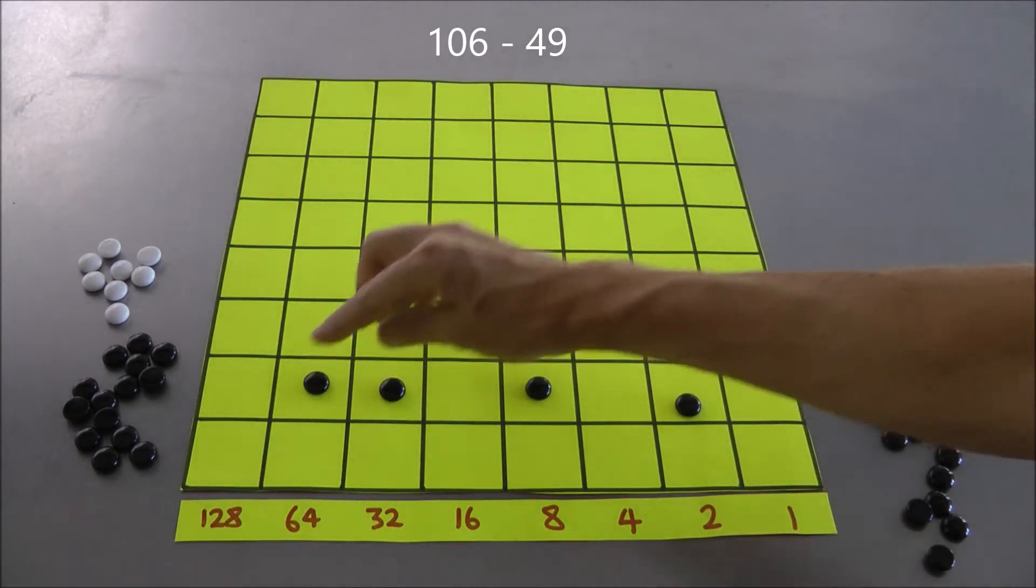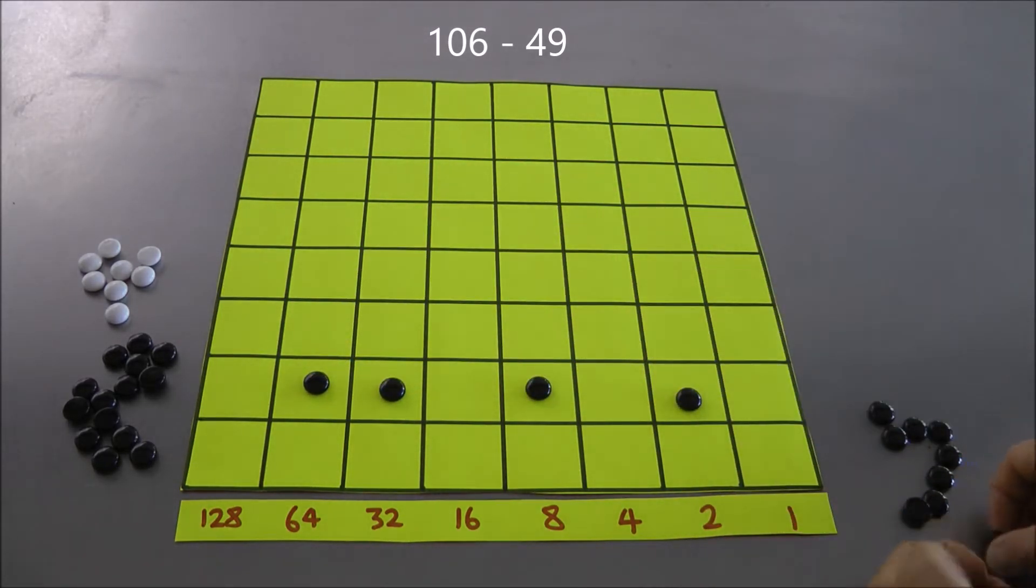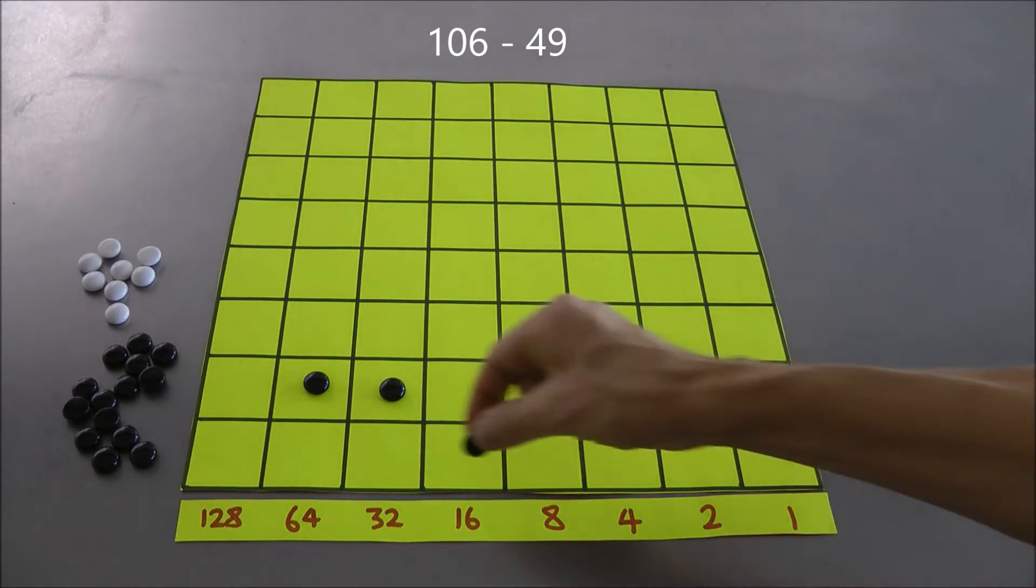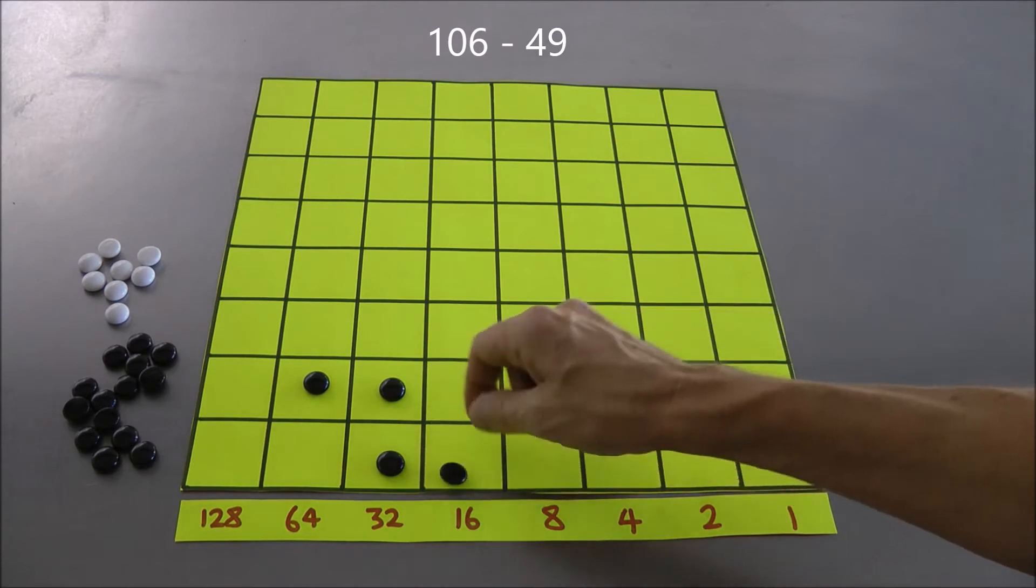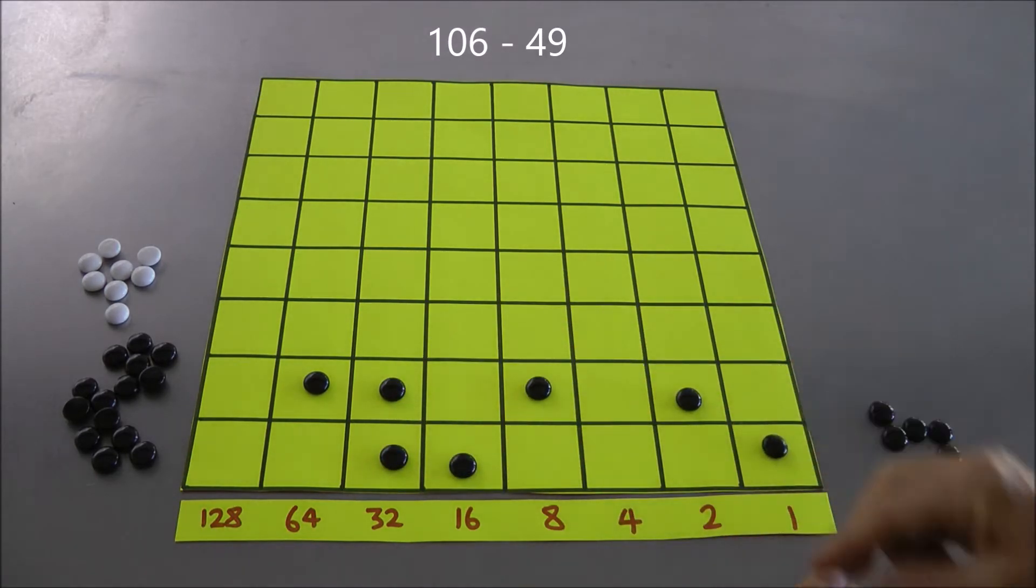And we want to subtract from that, I said 49, I believe. He said represent that on the bottom row, 49. What is 49 going to be? It's going to be 48, I believe it's a 32 and a 16, yes, and 1 makes 49. Great.